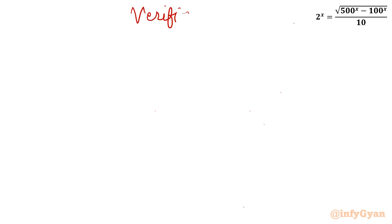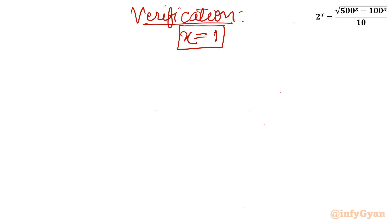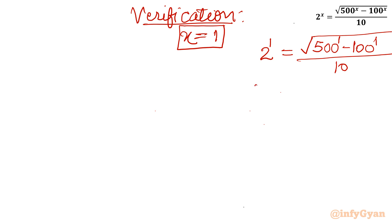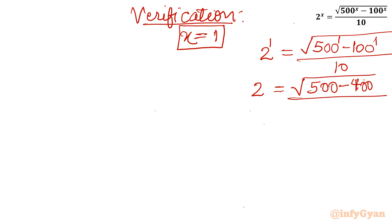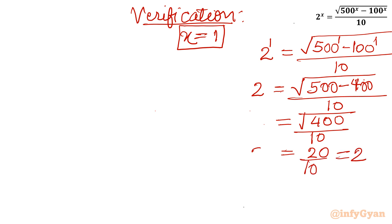Let us cross-examine with verification. For x = 1: LHS = 2^1 = 2. RHS = sqrt(500^1 - 100^1) / 10 = sqrt(500 - 100) / 10 = sqrt(400) / 10 = 20 / 10 = 2. LHS = RHS = 2, so x = 1 is a true solution.